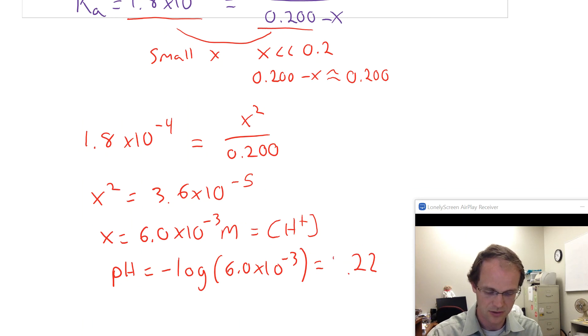So 2.22 is the pH of a pure 0.2 molar formic acid solution. In the other videos, we're going to talk about what happens as we continue to titrate this, as we start to titrate it and add maybe 10 milliliters of hydroxide, sodium hydroxide.